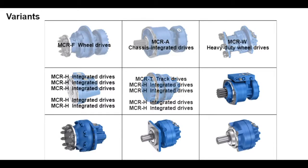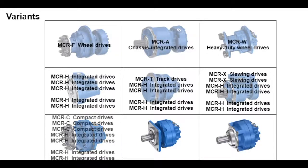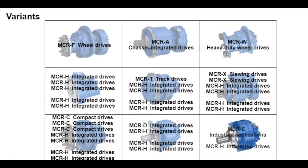MCR T motor is for compact track loaders and trench rollers. MCR X motors are installed in the slewing drive of mini excavators and midi excavators. MCR D and MCR E motors are primarily for industrial applications, such as rubber, plastic, and paper production systems, or in recycling systems.